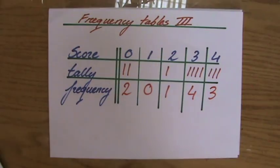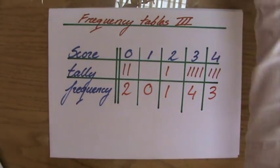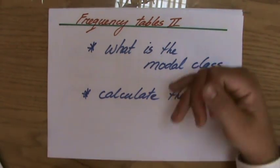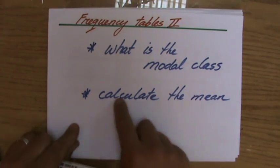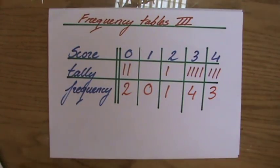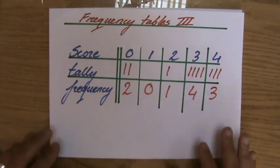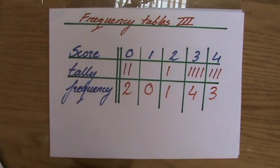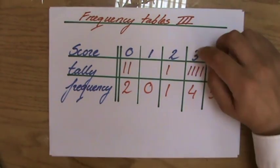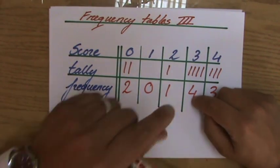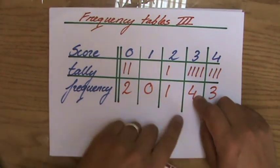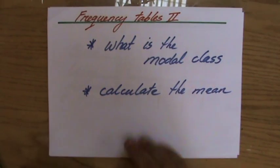You can get questions about frequency tables. The first one: what is the modal class? The modal class means the same thing as the mode — which score is the most popular? A score of three is the most popular class because four people got a three. So the modal class is three.